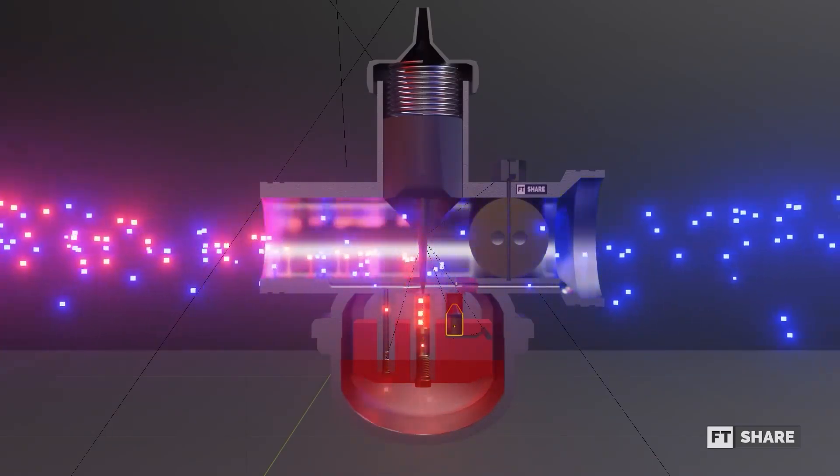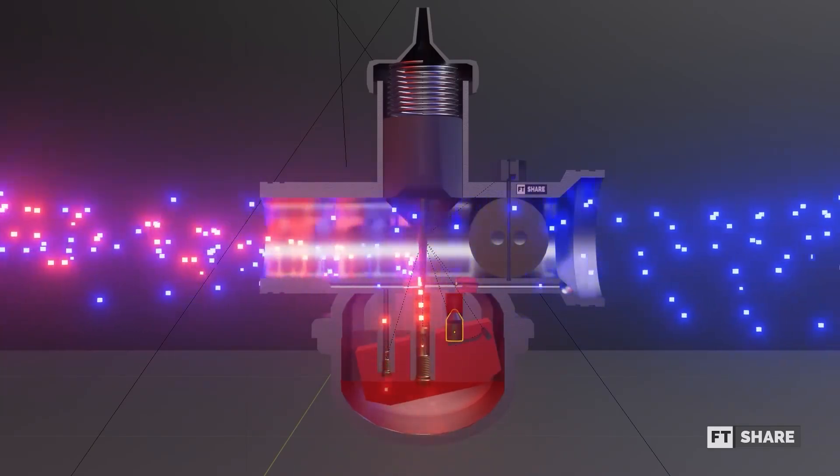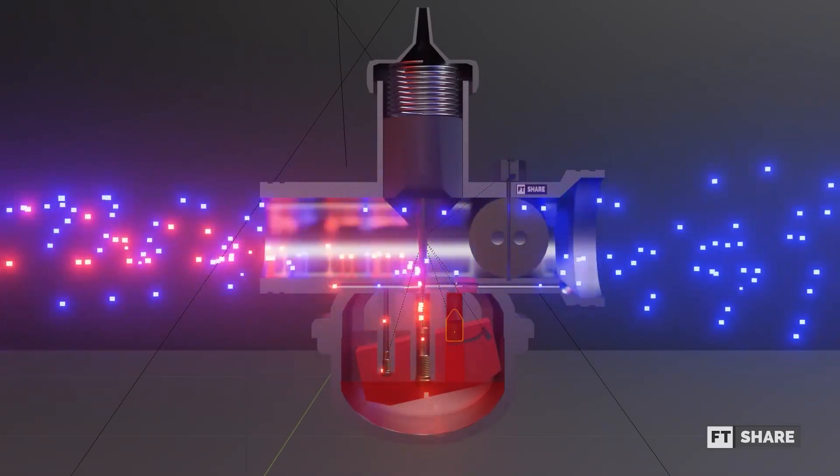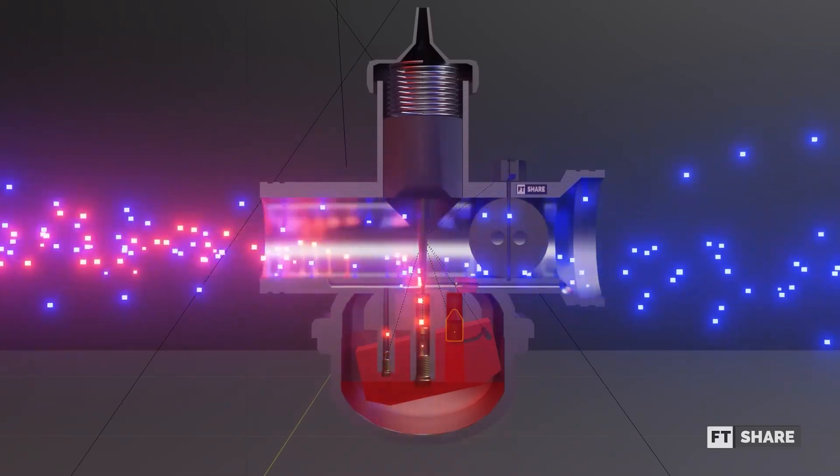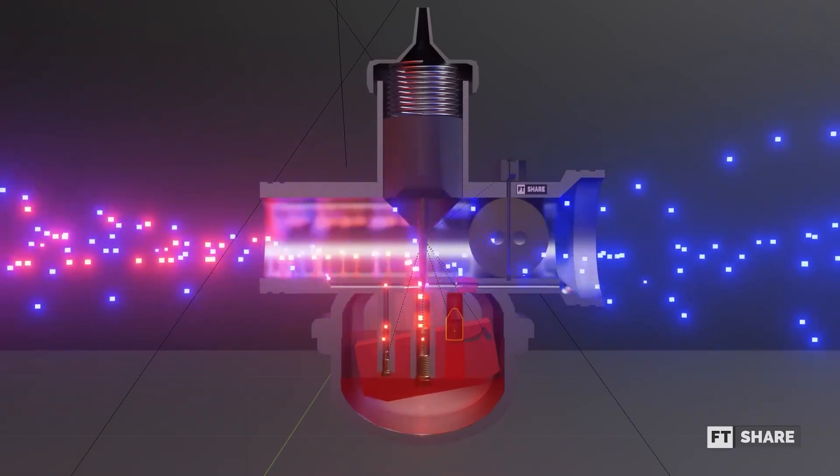As we travel further, more gasoline is consumed, causing the float to decrease and opening the needle or float valve to resupply fuel from the tank to the float chamber. This process continues until the float is lifted to its original position, closing the valve once again.